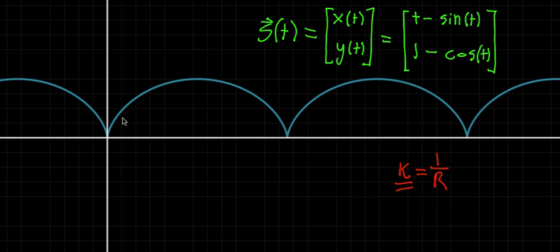And the way that you're thinking about this is for each value t, you get a certain vector that puts you at a point on the curve. And as t changes, the vector you get changes, but the tip of that vector traces out the curve as a whole. And you could imagine just the vector drawing the curve as t varies.